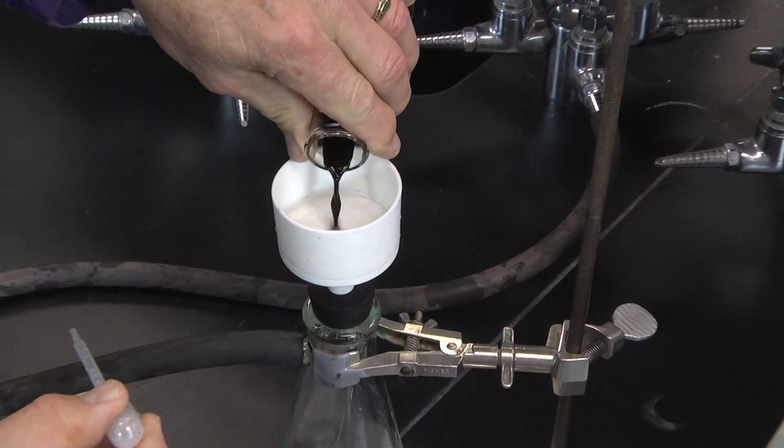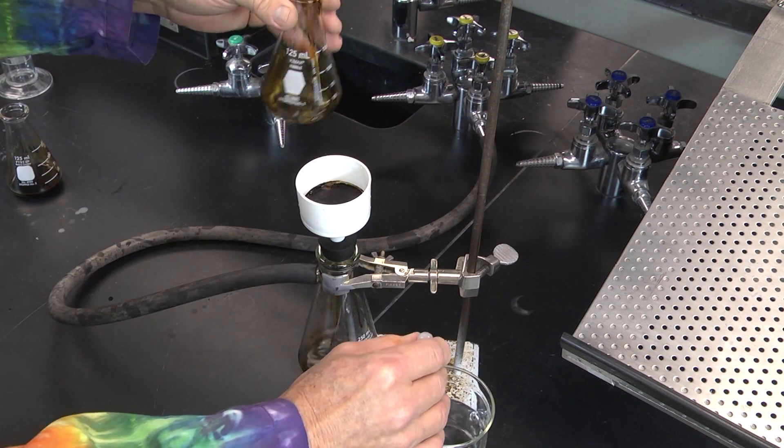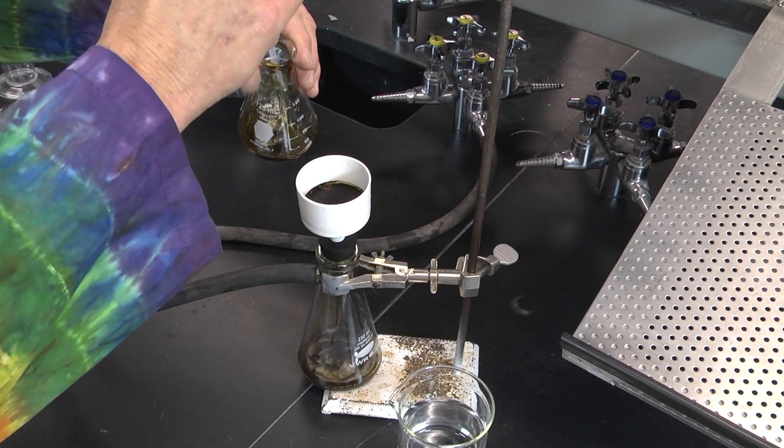Pour the reaction mixture into the center of the filter paper. Rinse the flask with a small amount of water and pour that into the funnel as well.